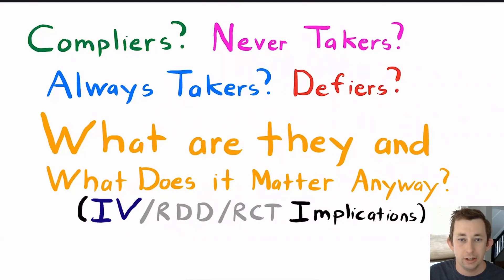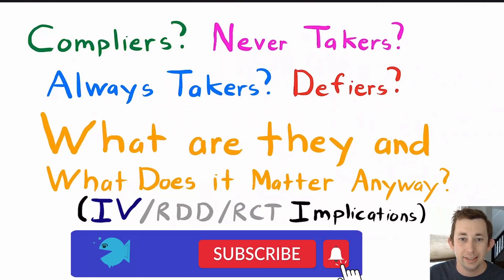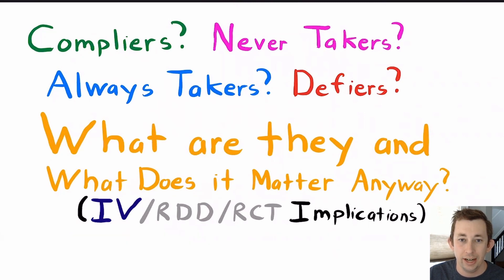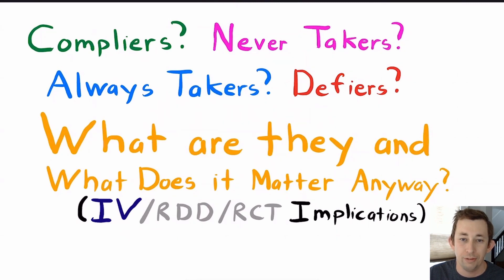Welcome back to In Case of Econ Struggles, and welcome to another causal inference video. In the last instrumental variable video we talked about compliers, never takers, always takers, and defiers. I want to go a little more into depth about what each of these types of people mean and how they affect an IV estimate. These four types also appear in regression discontinuities and randomized control trials.